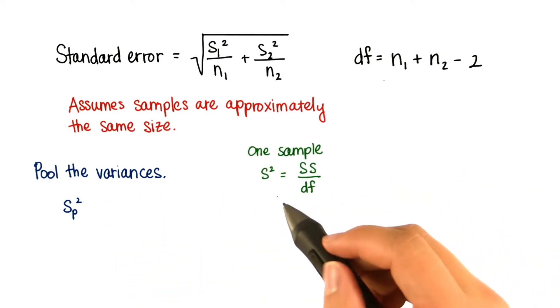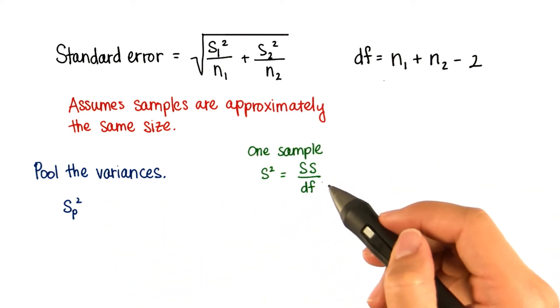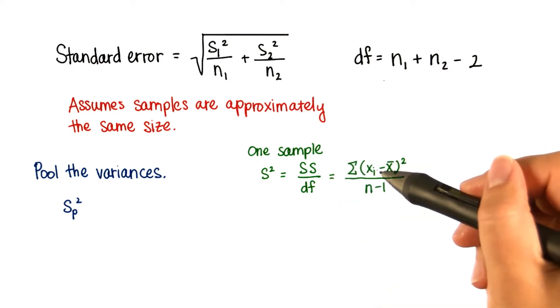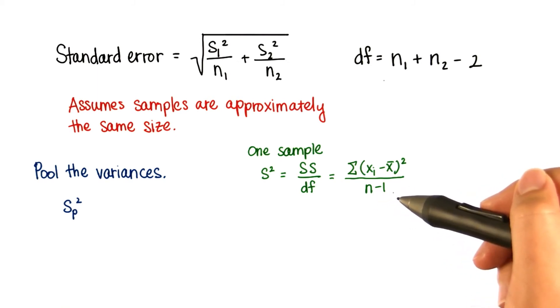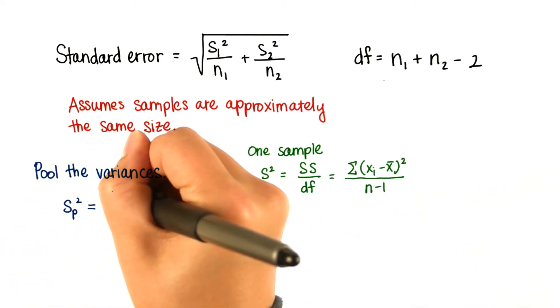Remember when we had one sample that the variance was the sum of squares divided by the degrees of freedom, which written out is the sum of the squared deviations divided by n minus 1. With pooled variances, we're doing almost the same thing.